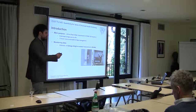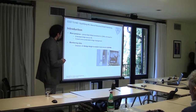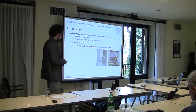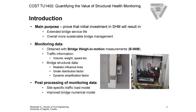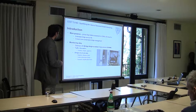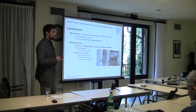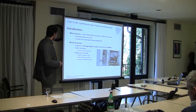The type of SHM data used is bridge weigh-in-motion measurements. Here we can see the sensor — for those of you who are not familiar with it, these are sensors that use the bridge as a weighing scale to weigh the traffic on the bridge, but they also give some structural data. We can divide the data obtained into two categories: the first is traffic information, which gives volume, weight, speed, etc. of every vehicle passage, and the other is structural data.